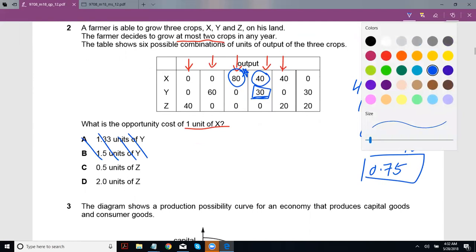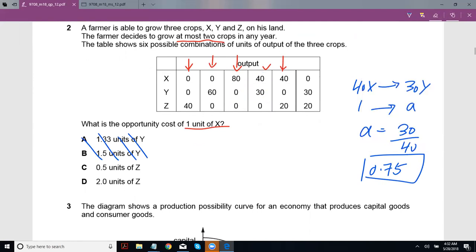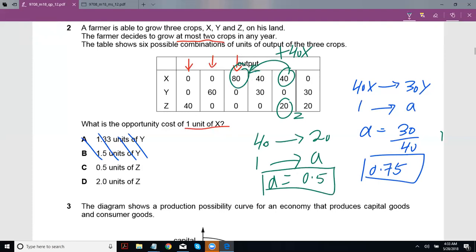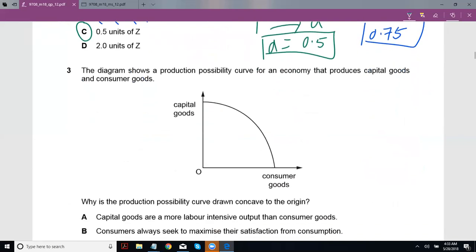Now let's try to do it in terms of Z. So let me kind of do the same thing again. So look at like this, if you want to double X or a better way to go about, if you want to add 40 X, you kind of have to give up 20 Z. So the opportunity cost of producing 40 X is 20 Z. What is the opportunity cost of producing one X? That would be quick maths 20 upon 40, right? So that is 0.5 units of Z for one unit of X. There you go.